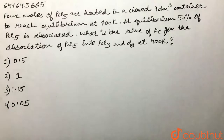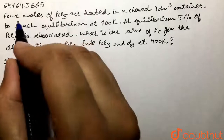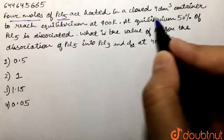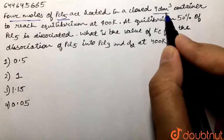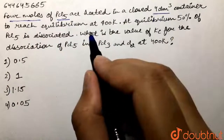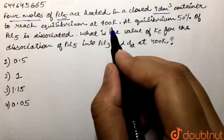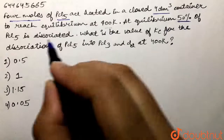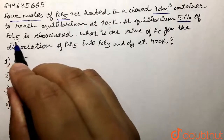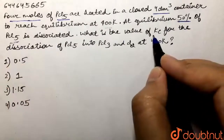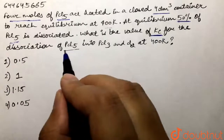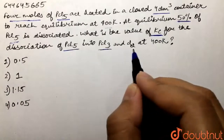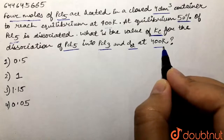Our question is: 4 moles of PCl5 are heated in a closed 4 decimeter cube container to reach equilibrium at 400 Kelvin. At equilibrium, 50% of PCl5 is dissociated. What is the value of Kc for the dissociation of PCl5 into PCl3 and chlorine at 400 Kelvin?